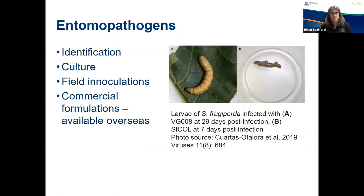The third option for biological control and use of natural enemies is with a very interesting group of organisms called entomopathogens. Entomopathogens are disease-causing agents and they have the potential to contribute to fall armyworm management. However, these can be hard to both identify and culture. If suitable entomopathogens are identified that are already present in Australia, cultures could be used to inoculate fields. But even better is if they can be developed into formulations that can be sprayed like insecticides. There are already commercial formulations of fall armyworm virus and others being developed that are now available overseas. Efforts are currently underway to get permission for these products to become available in Australia.